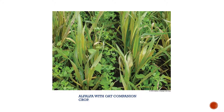This is alfalfa and an oat companion crop. In a companion crop setting, we want the companion crop to support that cash crop. In this setting, alfalfa would be the cash crop because it's widely used for different hay mixtures, and the oat will actually bring in some more nutrients and some protein as well.